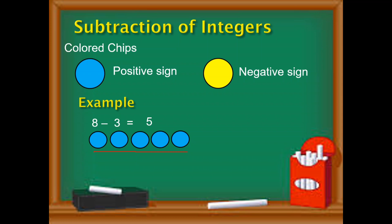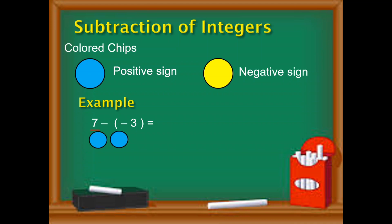Let us see when there is a negative in the given. The next example is seven minus the quantity negative three. Look at the minuend — it is seven, so we need to have seven blue chips. Then, because of the minus, we need to remove three yellow chips — bakit yellow? Kasi negative ang three at negative natin ay yellow. Ngayon, wala namang yellow chips dun sa una nating nilagay, so that's the time we need to use the zero pair.